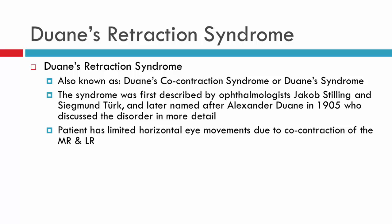Patients with Duane's Syndrome have a limitation of ocular movements — specifically their horizontal ocular movements, so abduction and/or adduction. It's due to a co-contraction of the medial rectus and lateral rectus, meaning those two muscles are being innervated at the same time — co-innervation, co-contraction, they're contracting simultaneously.